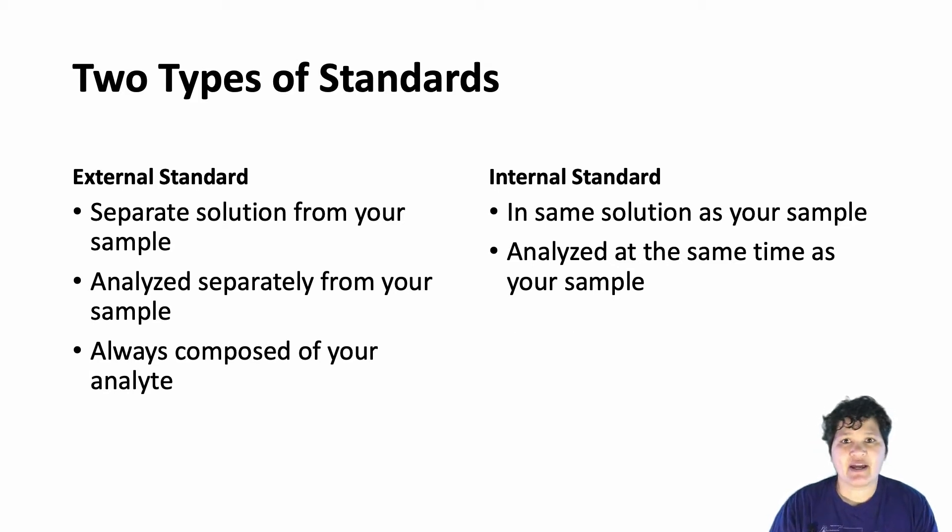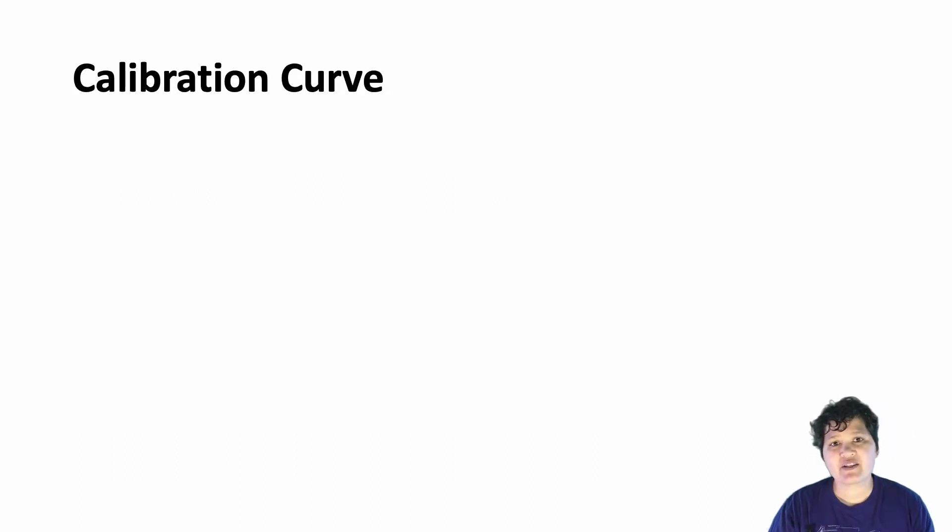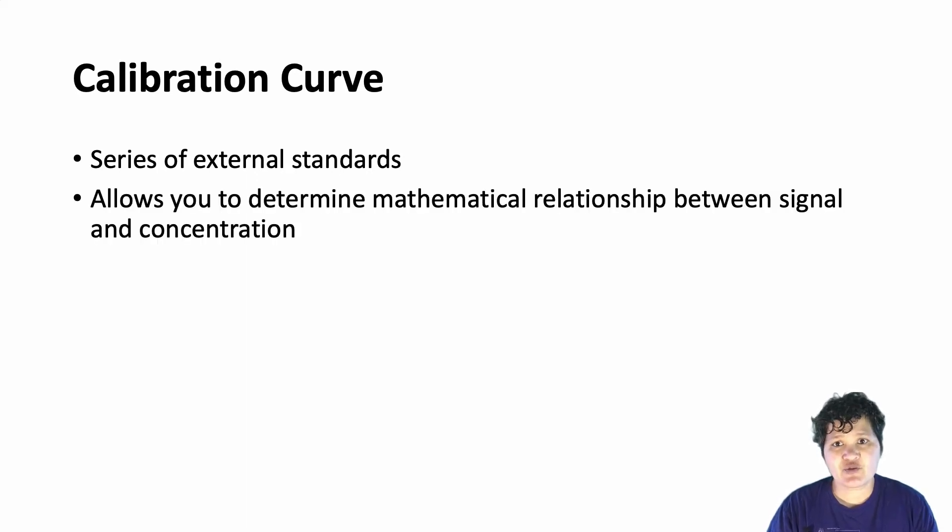So now we're going to talk about how we use external standards to quantify analytes and then after that we're going to talk about using internal standards to do the same thing. When we use external standards for quantitation, we create what we call a calibration curve. This is a series of external standards with known concentration. By graphing the instrument response to each external standard, you can develop a mathematical relationship between response and concentration.